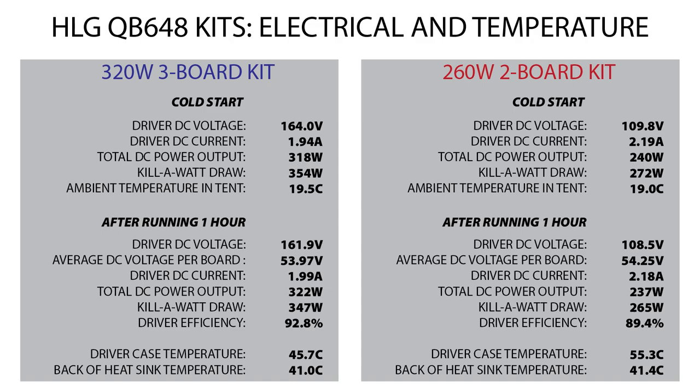Both lights got up to about 41 degrees Celsius on the top side of the heatsink, and the voltage across the boards on the 320 watt kit averaged about 54 volts per board, while on the 260 watt kit they averaged about 54.25 volts.